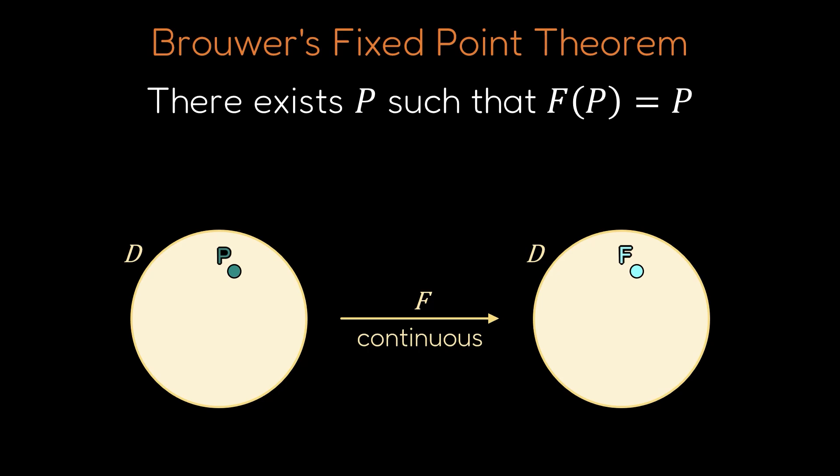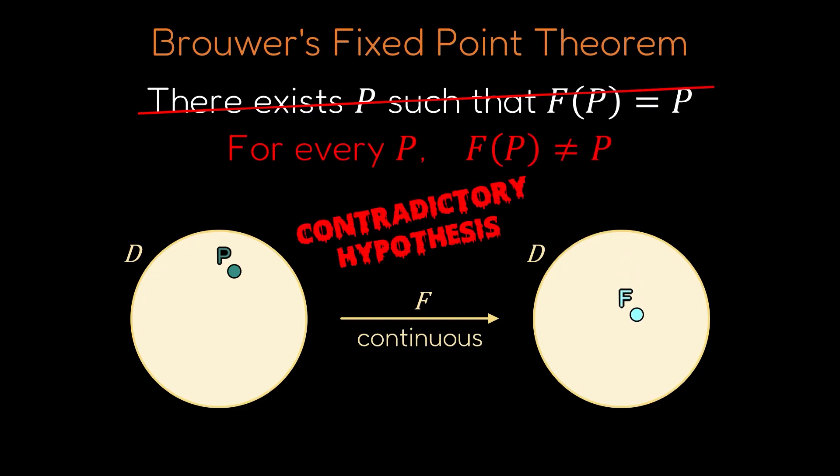We'll proceed by contradiction. Proofs by contradiction are elegant and powerful. They show that something must be true by proving that its negation would lead to a contradiction. In our case, we'll assume that the function F has no fixed points, and we'll use this assumption, called contradictory hypothesis, to reach a logical impossibility.